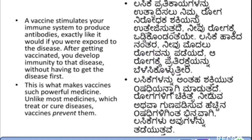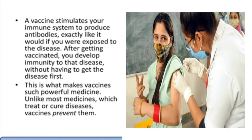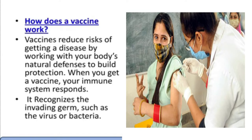If the patient encounters coronavirus again, the antibodies and T cells which have the memory will be triggered to fight the virus. A vaccine stimulates your immune system to produce antibodies exactly as it would if you were exposed to the disease. After getting vaccinated, you develop immunity to that disease without having to get the disease first. This is what makes vaccines such a powerful medicine — unlike most medicines which treat diseases, vaccines prevent them.